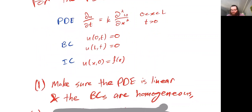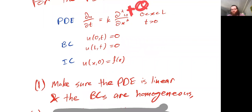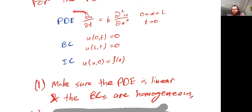In practice, what we do is first make sure the PDE we care about is linear — in this case, it is. We also want to make sure it's homogeneous. Here I've written the boundary conditions, but in general you might have a source term that gets in the way of homogeneity. We want to make sure we're working with a linear homogeneous PDE, and in this case we are.